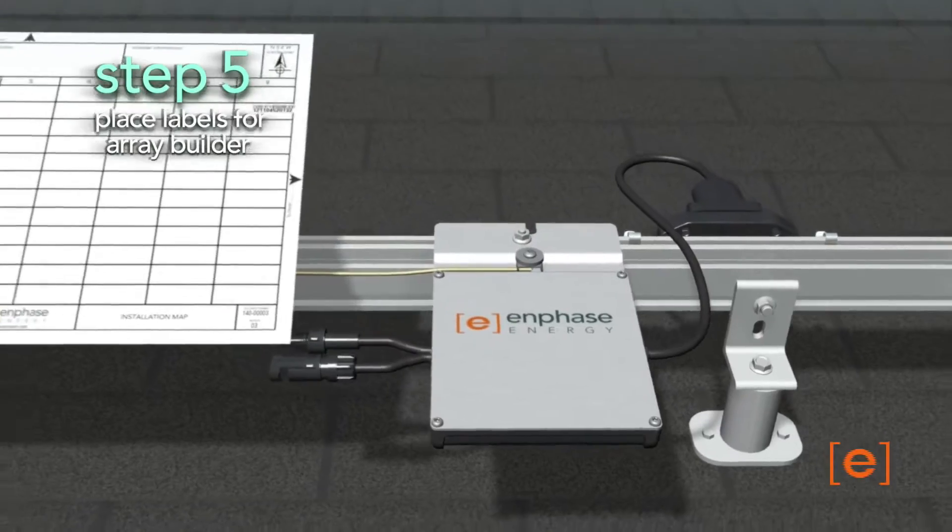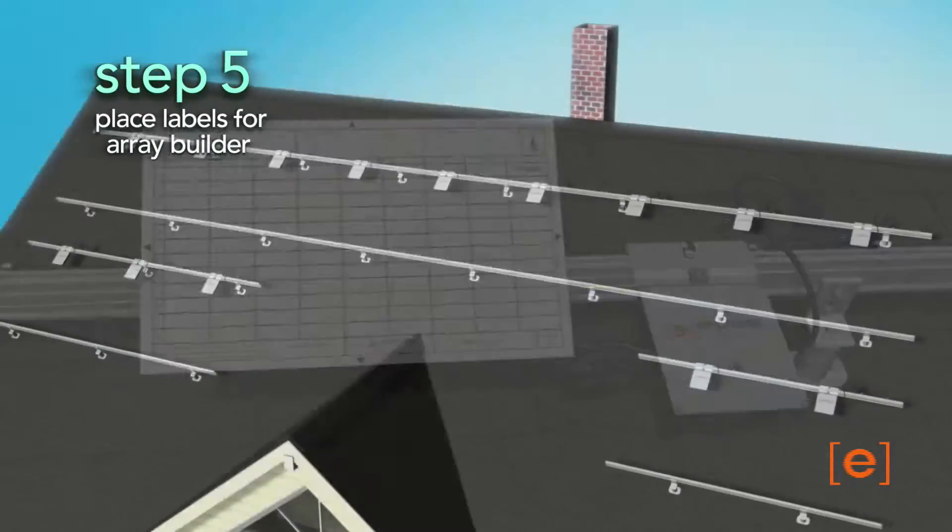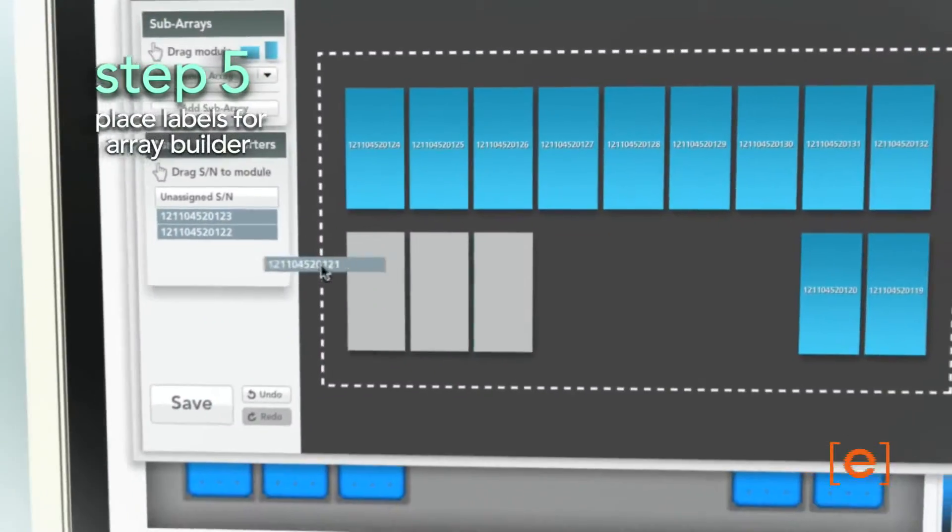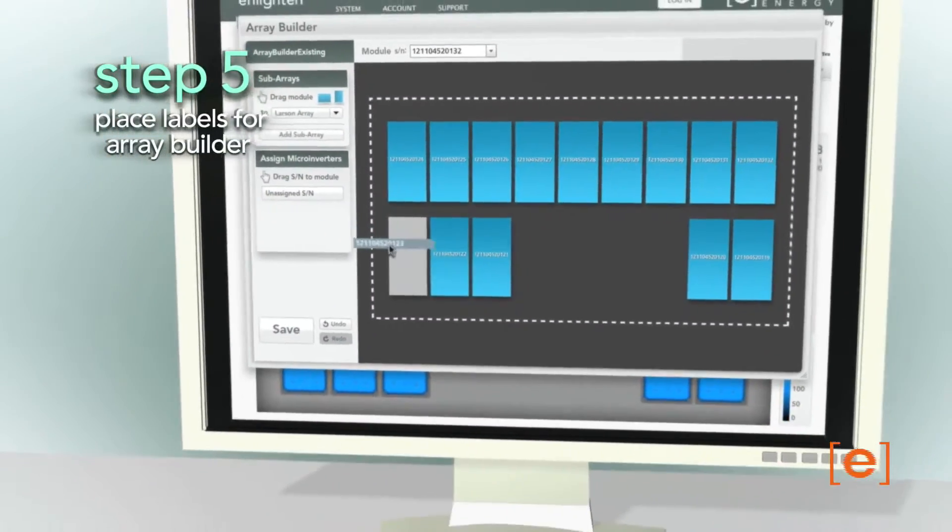Finally, use the labels to identify the location of each microinverter and use the Easy Online Array Builder utility to enable the array to be viewed in the Enlighten monitoring system.